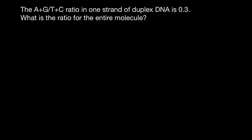In order to solve this problem, you have to know Chargaff's rule and two postulates. The first postulate is that in double-stranded DNA, any number of adenines always equals the number of thymines, because these two bases make a pair. And also, the number of guanines equals the number of cytosines.